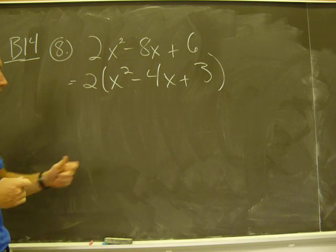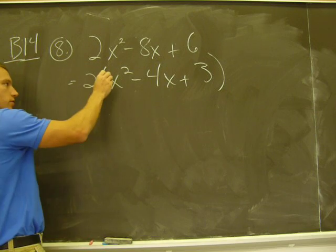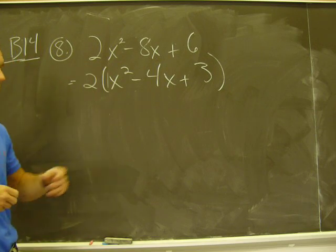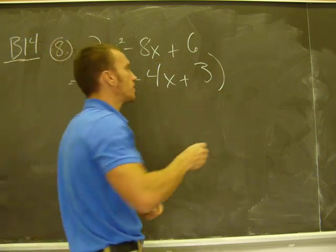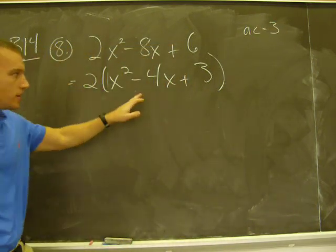Factor the greatest common factor. Now I've got to look at this and see if that factors. The way we're doing that is, there's a 1 there, we're using that AC method. 1 times 3, AC is 3. My B term is negative 4.